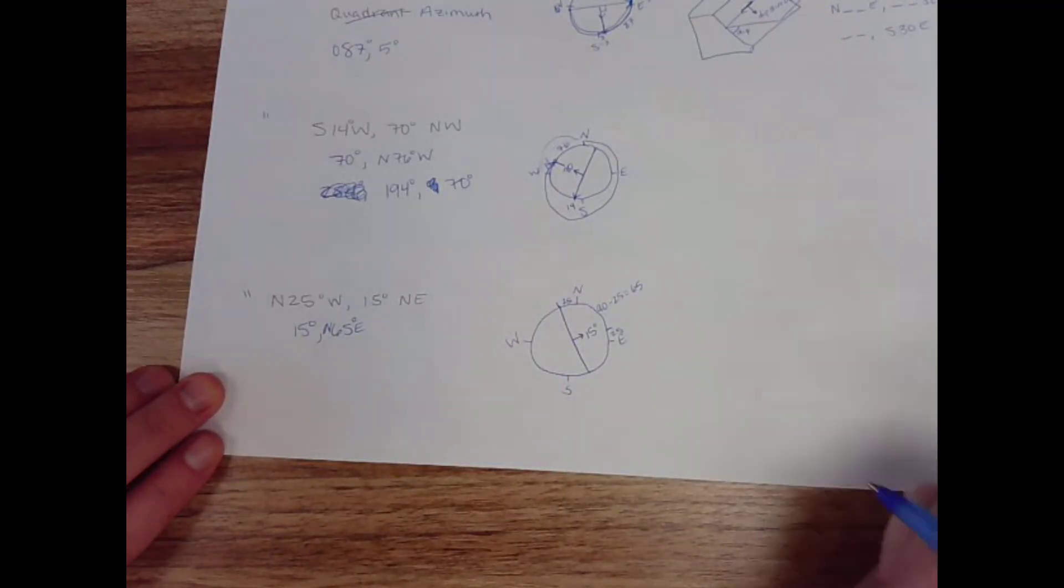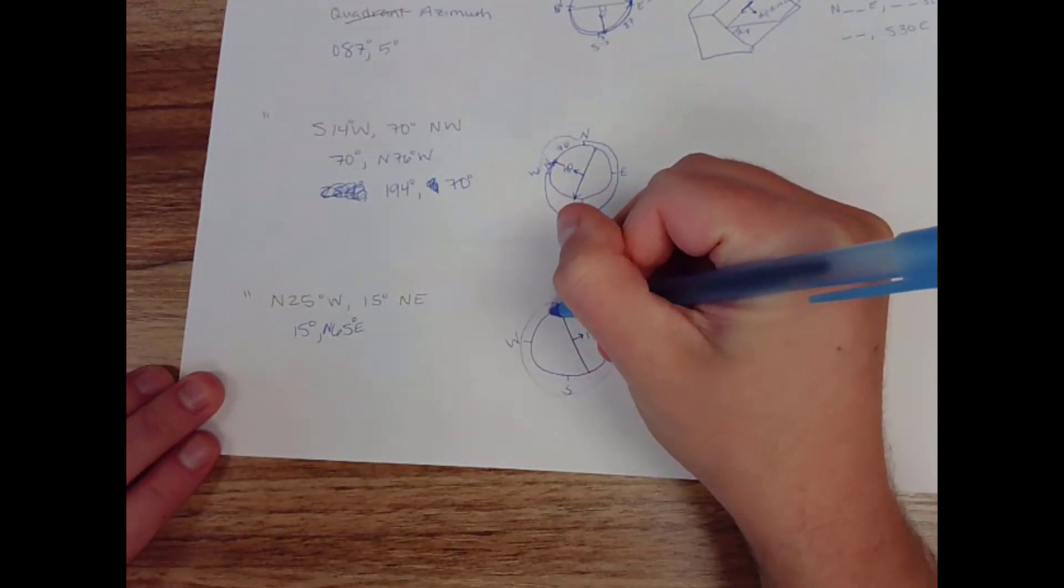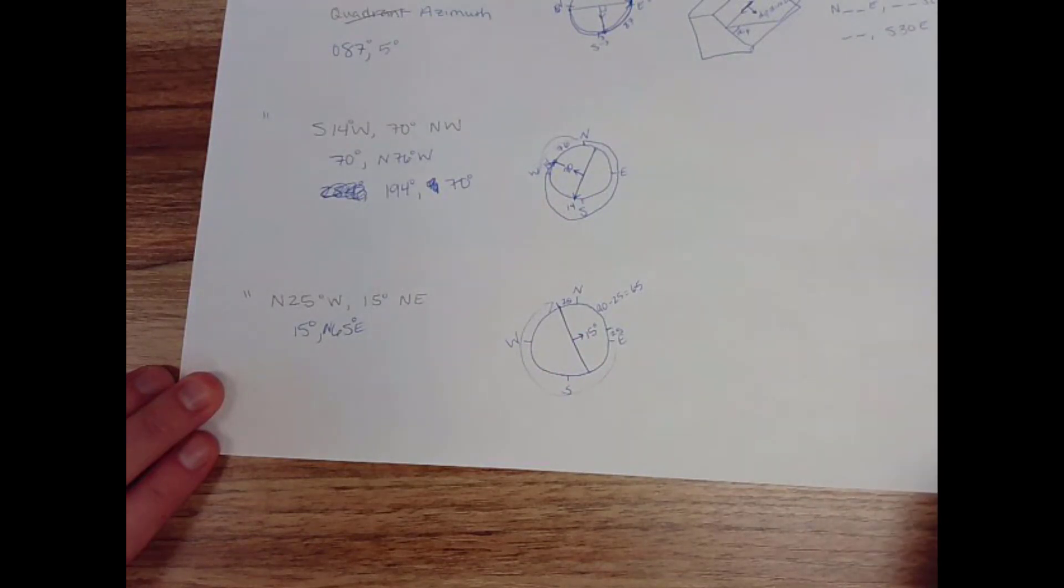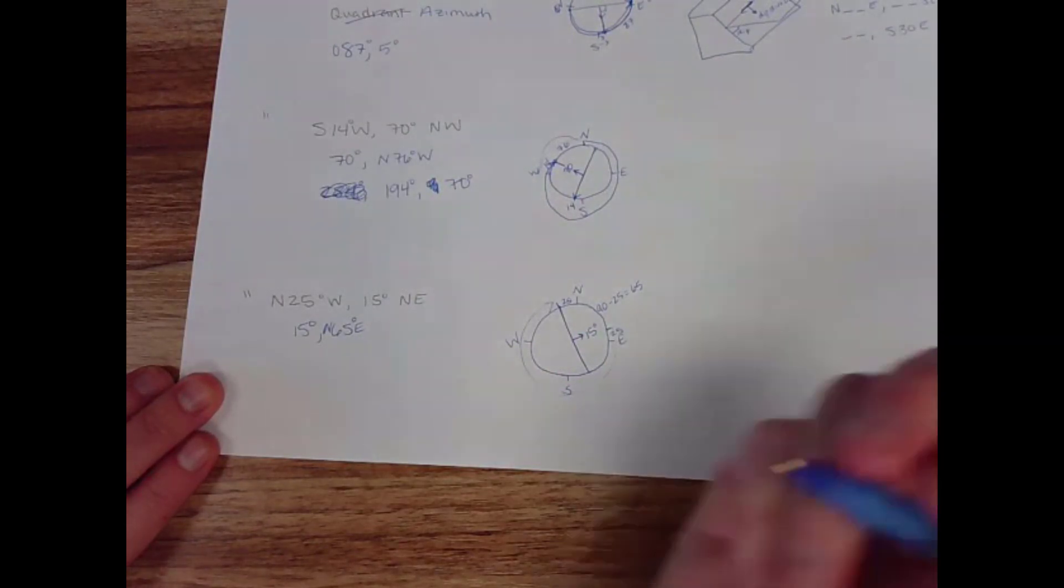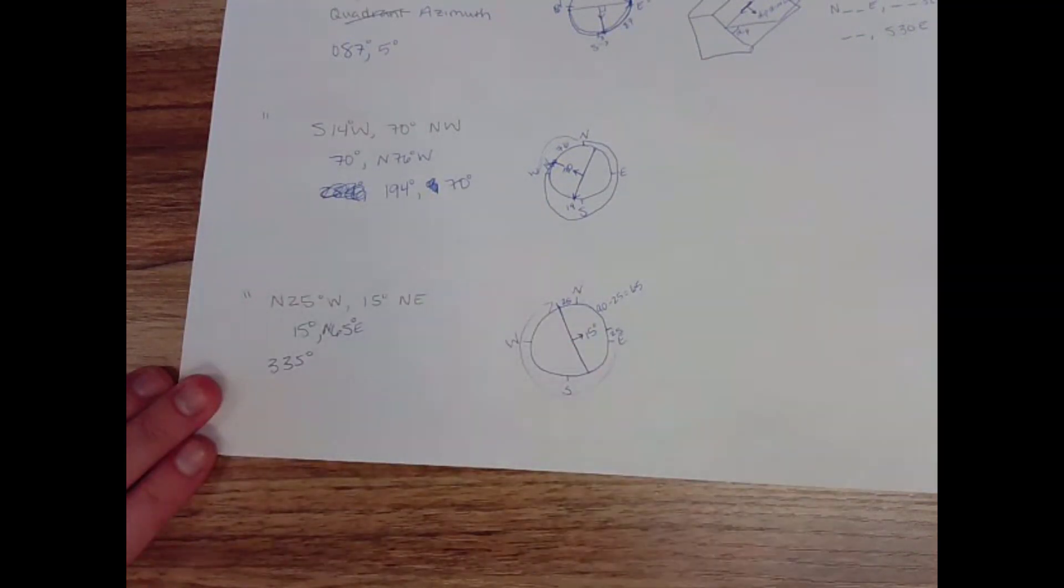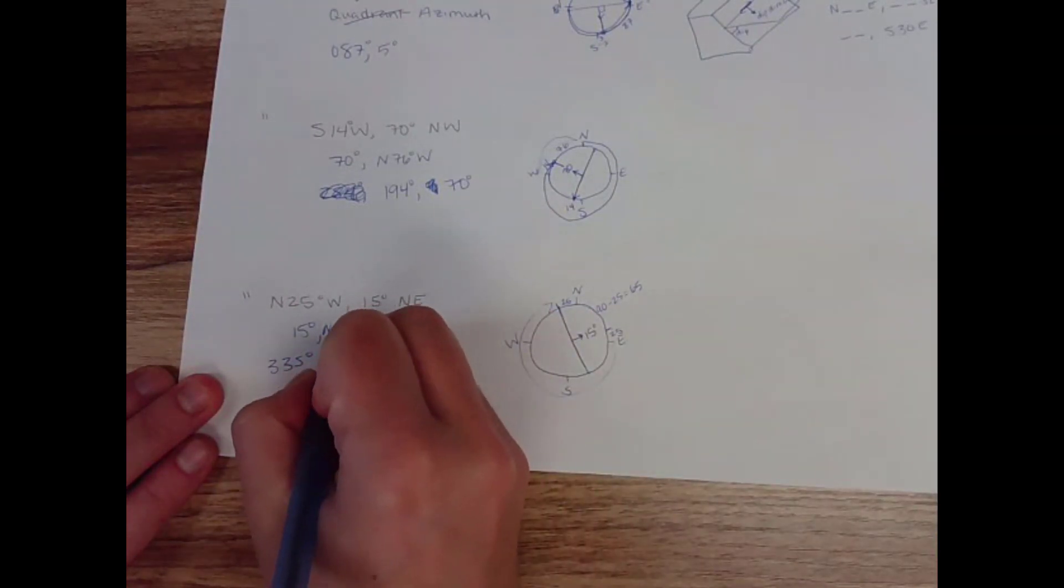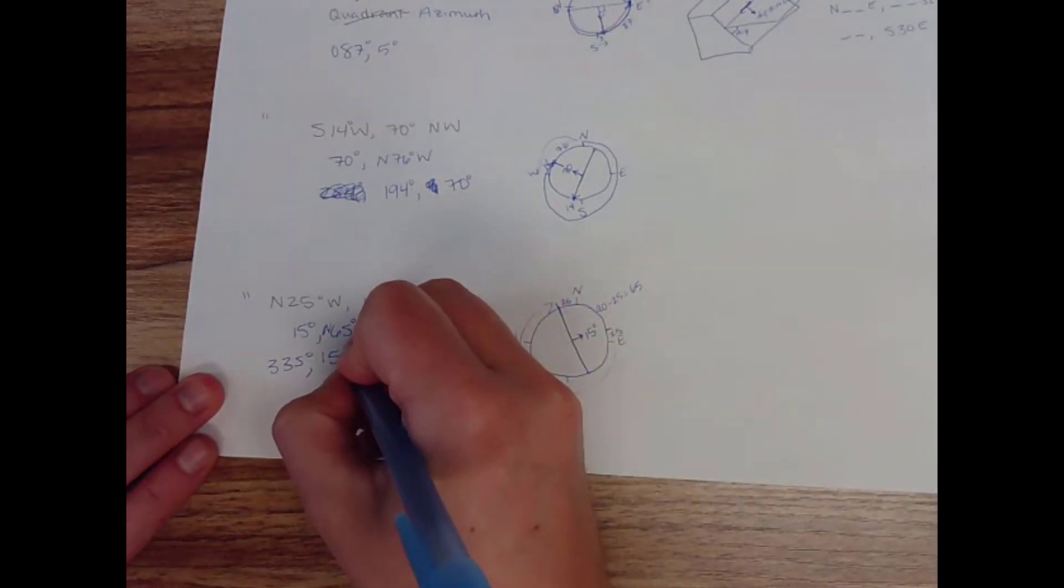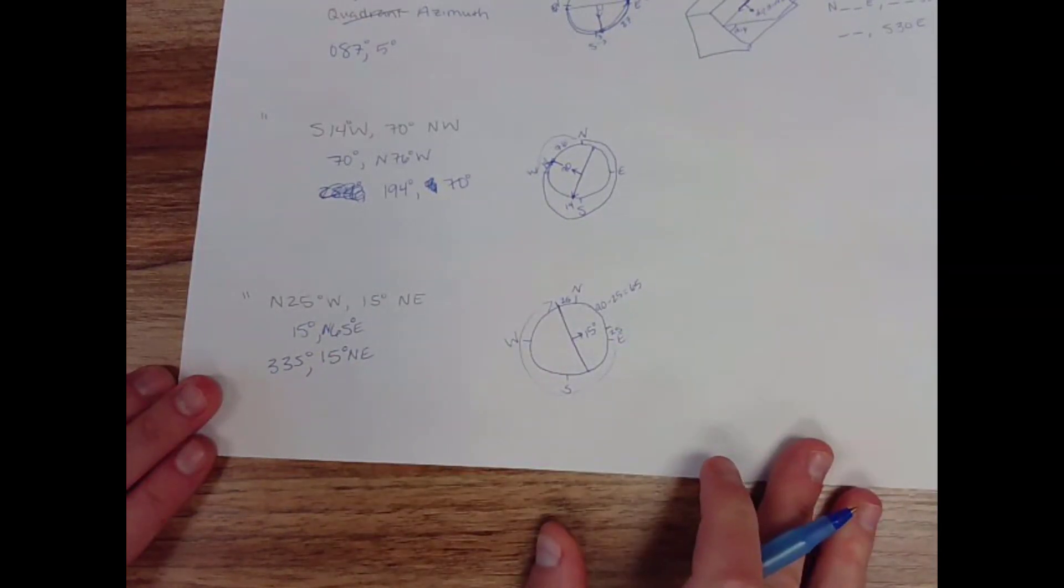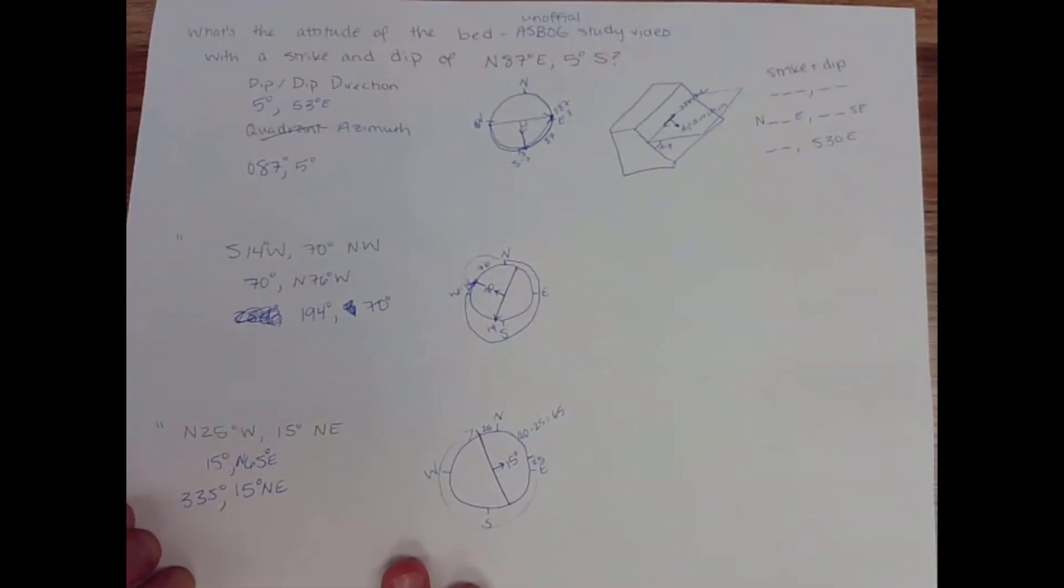And then in azimuth, my strike is going to be coming all the way around to this point. So that's 360 minus 25. 335. And my dip is 15 degrees to the northeast. Right. So hopefully this video helps you understand how to convert the attitude of a bed from one format to another. Thanks.